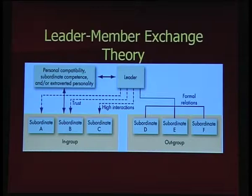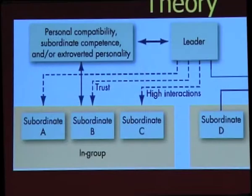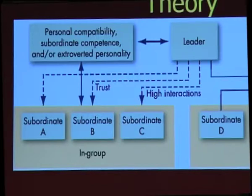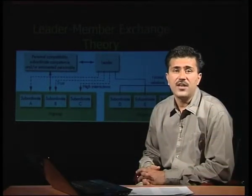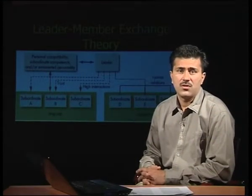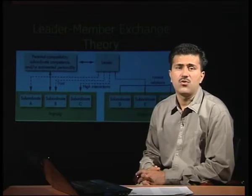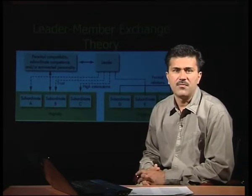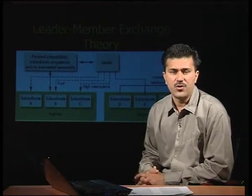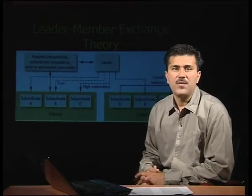With this diagram we can study LMX theory. At the top there is a leader. The personal compatibility of the leader, the subordinate competence, and extrovert personality of subordinates appeal to the leader a lot. The leader always wants certain persons who are willing to provide solutions, not those who come with a list of problems.